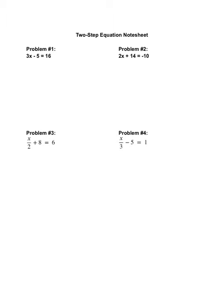Alright, let's review two-step equations. So in problem number one, we have 3x, which is the variable term. We have negative 5, a constant, and it equals 16, the constant.